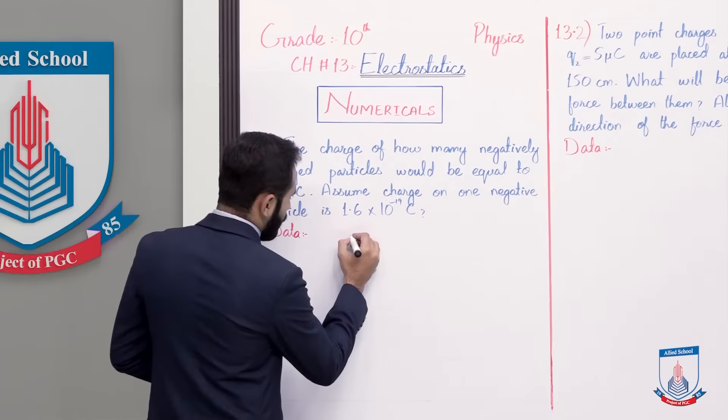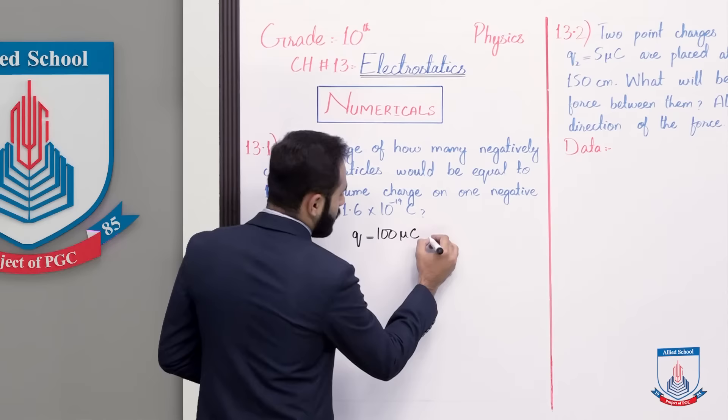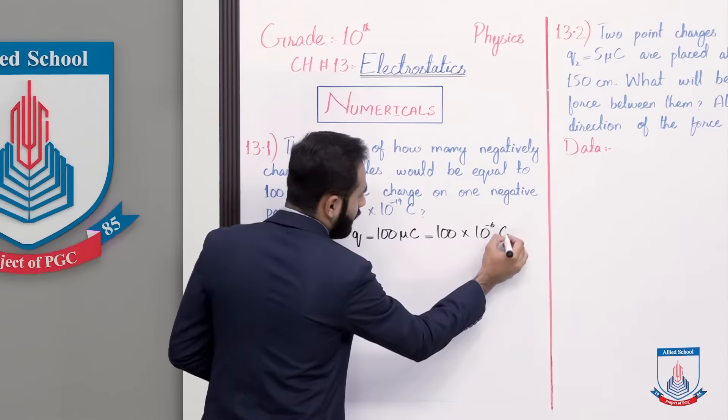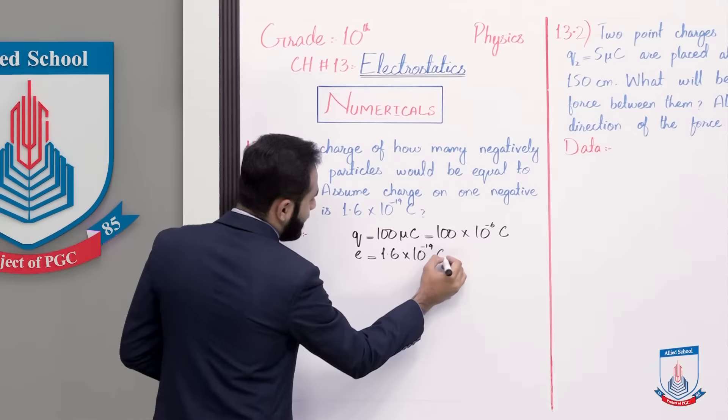Q charges that is 100 micro coulomb. Micro ki value hooti hai 10 to the power minus 6 coulomb. Similarly joh ek elektron ke uper joh charge hoota hai that is 1.6 multiplied by 10 to the power minus 19 coulomb.